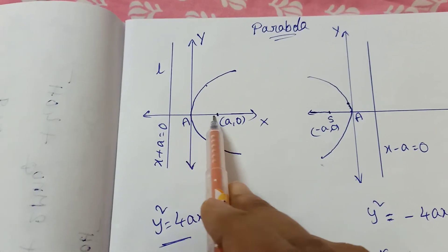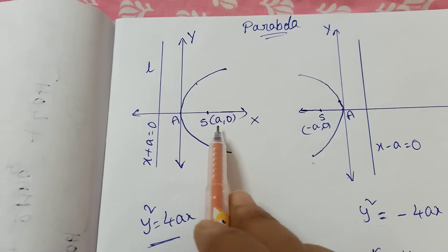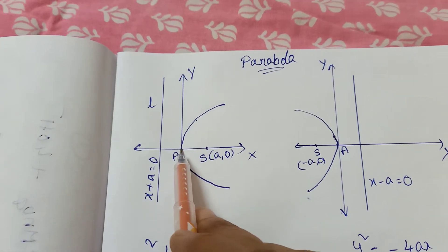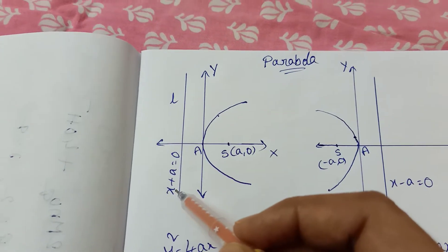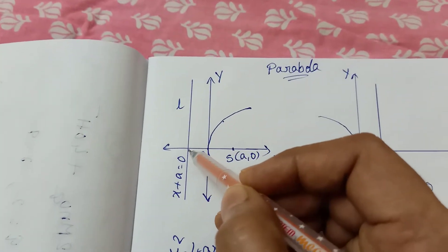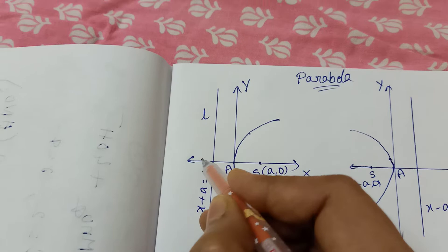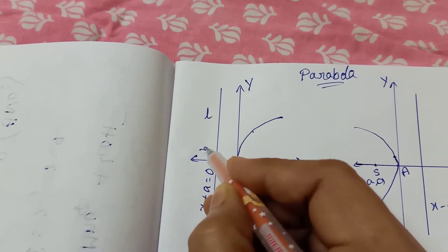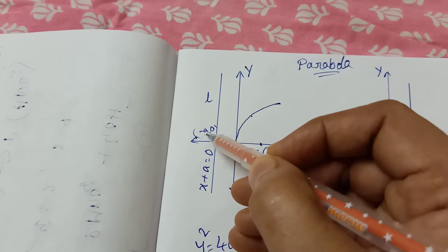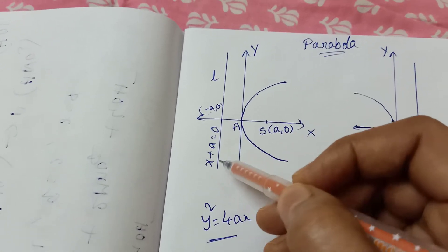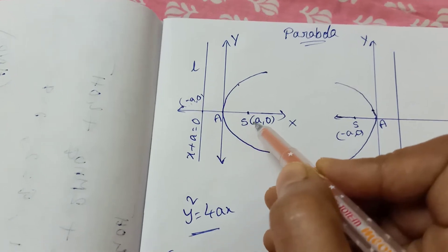The focus lies on the x-axis at point (a, 0) — because there is no y-coordinate, only a, 0. A line parallel to the y-axis at x equals a is drawn. The directrix is on the left side at minus a, 0. The equation of the directrix is x equals minus a, or x plus a equals 0.